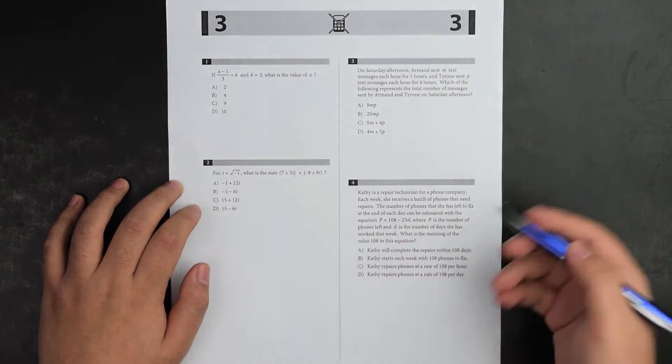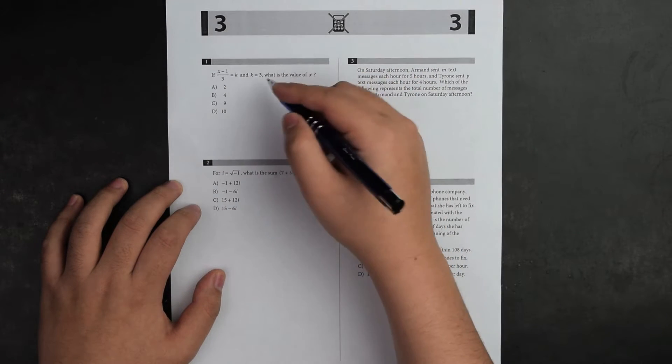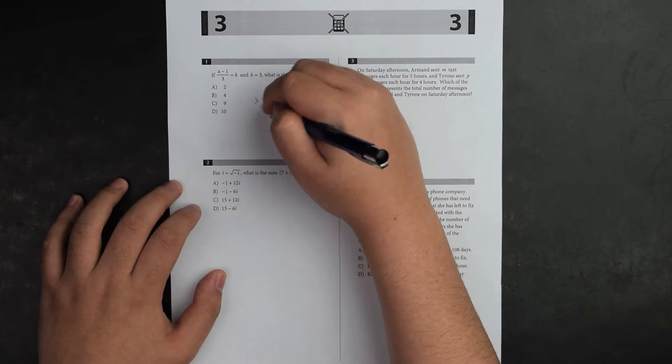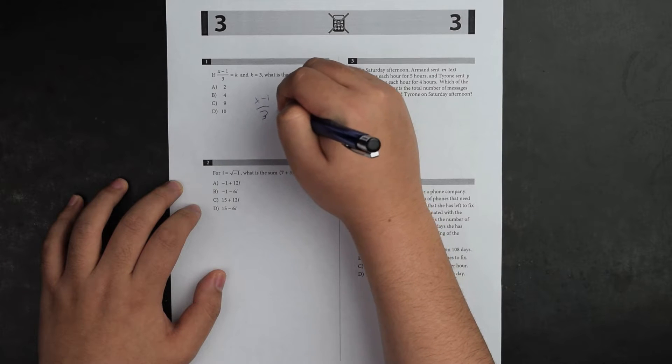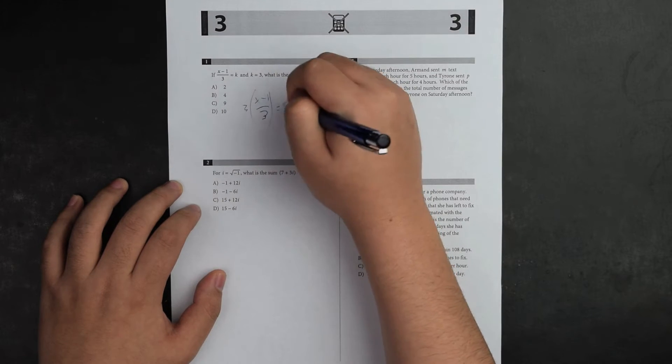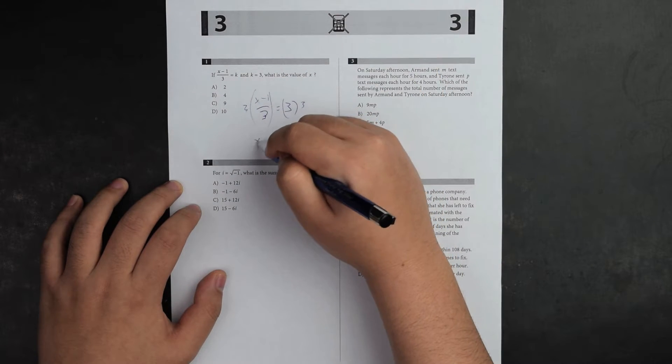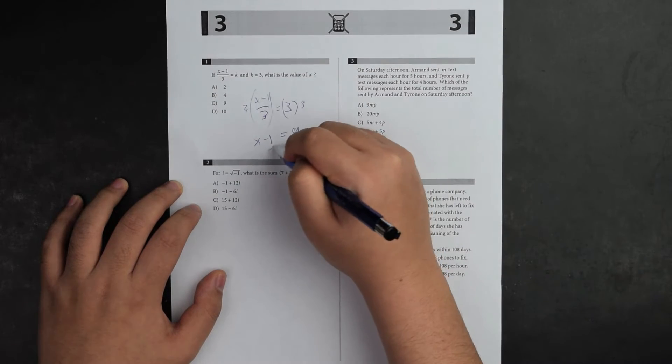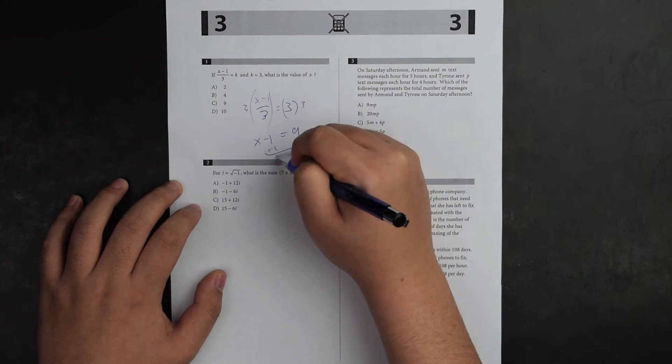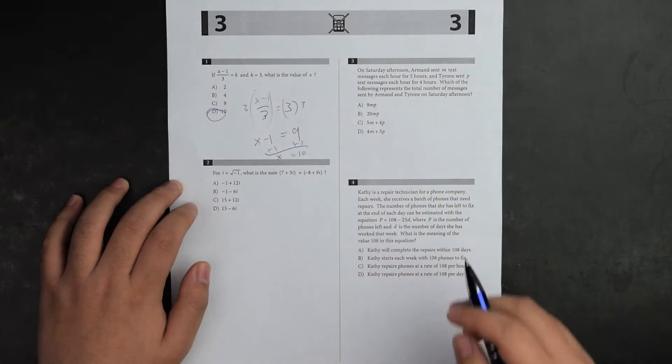I'm looking at this question and I see that k equals three. I need to solve it out real quick. And I know number one is going to be D.